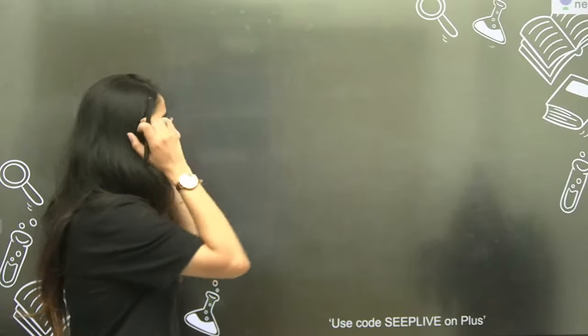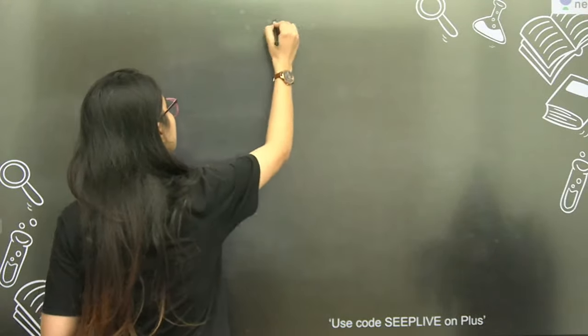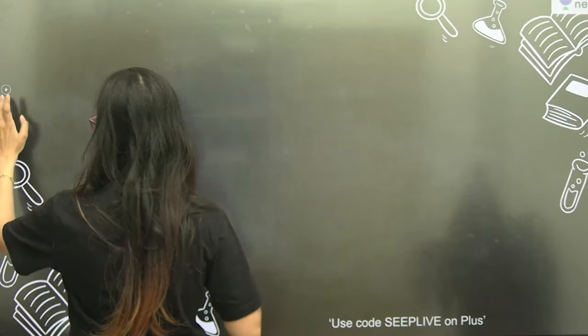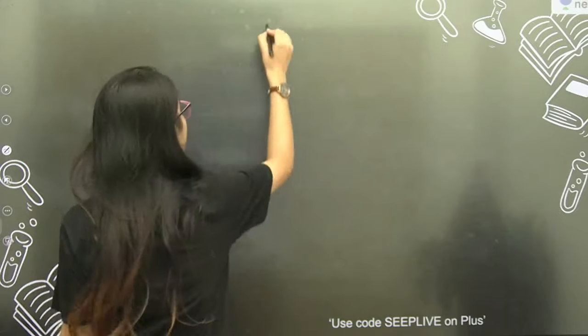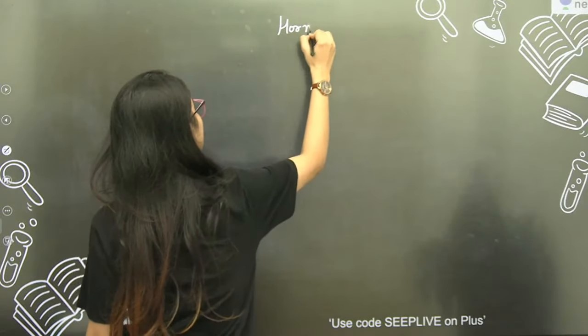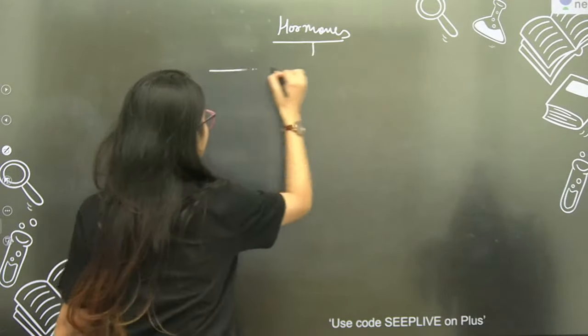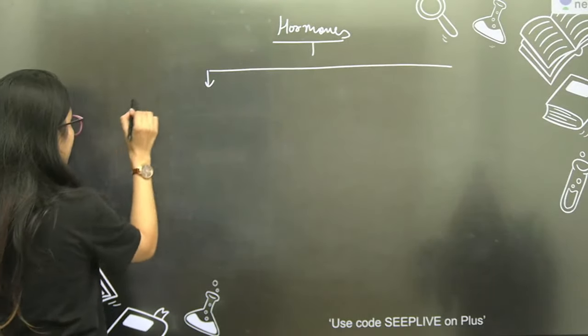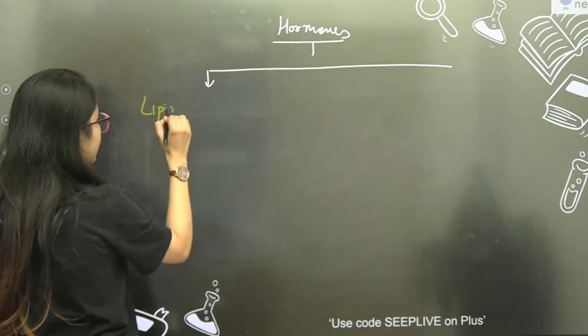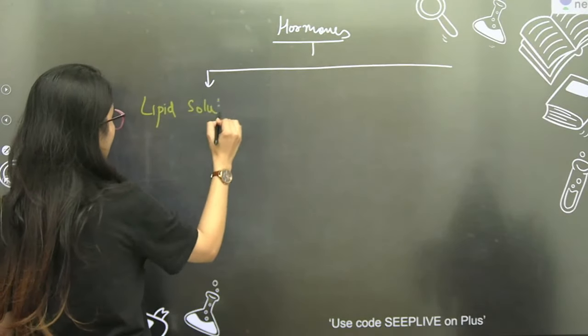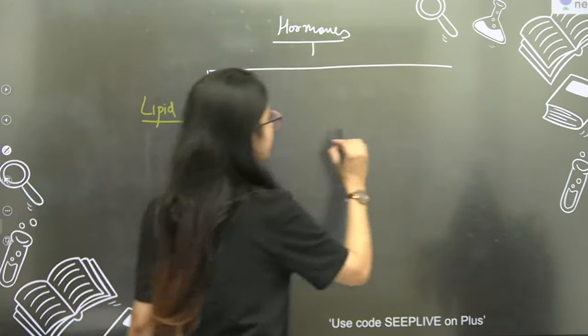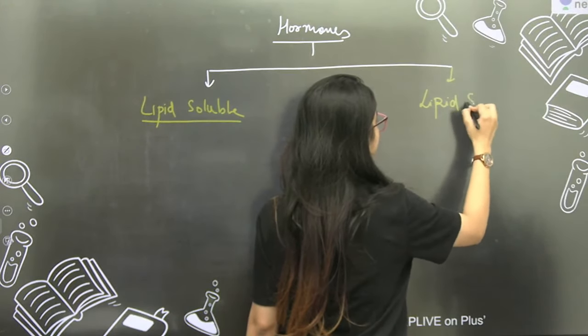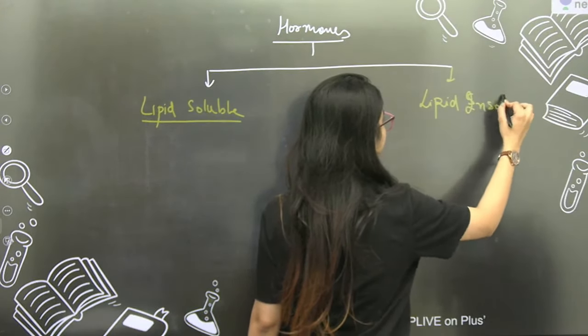So first we divide hormones into two categories. If we look at hormones, they are of two types. First category is lipid soluble hormone, and second type of hormones are lipid insoluble.